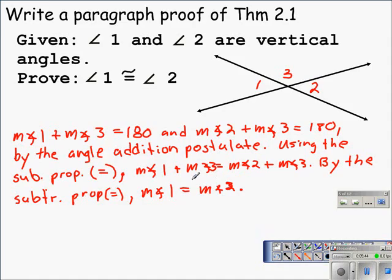And since the definition of congruent angles is angles that have the same angle measure, by the definition of congruence, we can say that angle 1 is congruent to angle 2. And we are done with that proof.